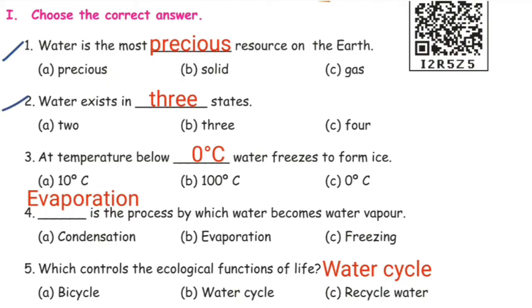Second one: water exists in dash states. Options: 2, 3, 4. Answer: 3. Water exists in 3 states.